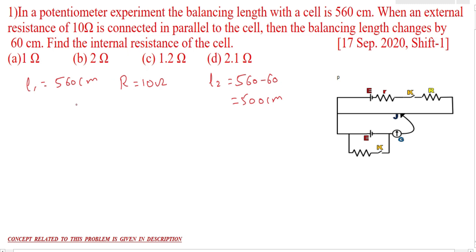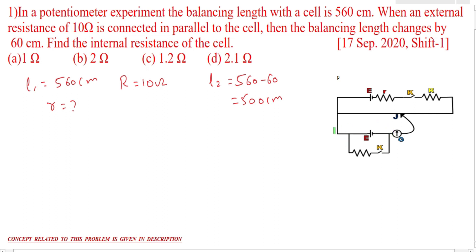We have to calculate the internal resistance, small r. If you see this circuit, this section we call the secondary circuit. Initially, the balancing length is 560 centimeters — this length is 560 centimeters — when the resistor is not there, that is, when this key is open. When we close this key, that is when this resistor is in the secondary circuit, the balancing length changed by 60 centimeters, reducing from 560 to 500 centimeters, which is our new balancing length L2.